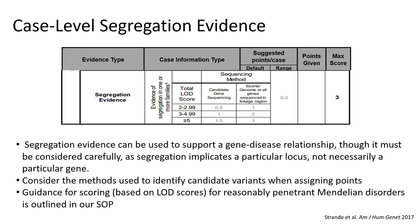Moving on to segregation evidence — if a variant is observed within the context of a family exhibiting segregation, you can award points for the variant and for the segregation if it meets certain parameters. In general, we've opted to categorize segregation evidence by LOD scores. LOD scores provided by authors can be used here; if a LOD score is not provided, one can be estimated for reasonably penetrant Mendelian disorders by counting the number of times a variant segregates with affected individuals in a family. More points should be awarded if variants were identified using genome-wide approaches such as exome or genome sequencing. The maximum number of points attributable to segregation evidence is 3.